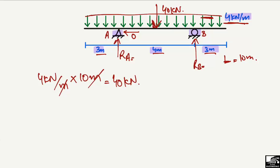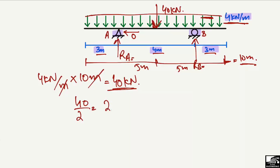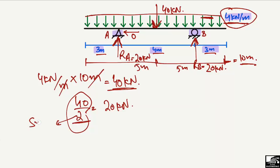This 40 kilonewton load acts at the center of the beam, which is 5 meter from each end. Since the total load is 40 kilonewton and we have two supports, we simply divide by 2: 40 ÷ 2 = 20 kilonewton. Each support takes half the load. So reaction at A = 20 kilonewton and reaction at B = 20 kilonewton. This method works when the UDL covers the whole beam with two symmetrical support conditions.